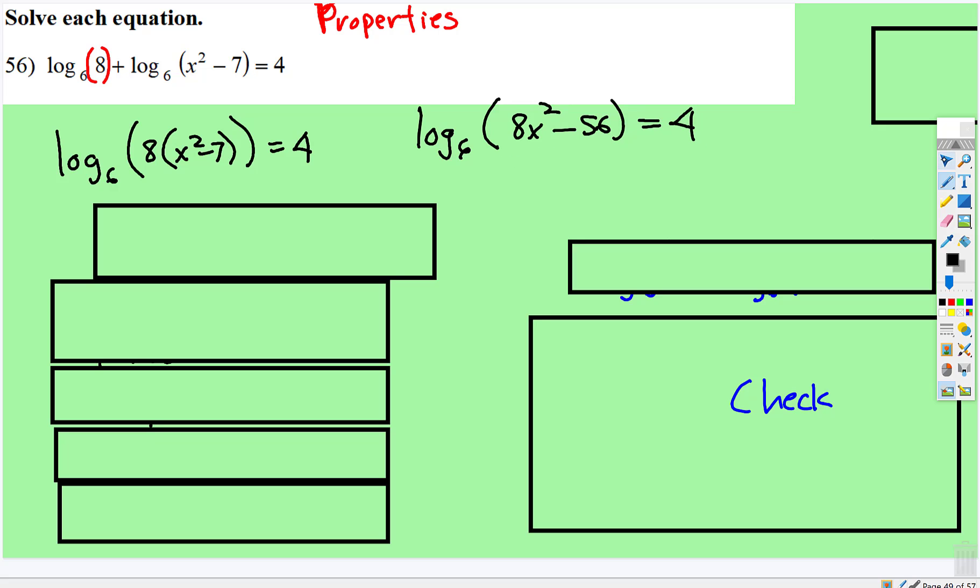Now there's nothing else you can do, so you can rewrite it. 6 to the 4th is equal to 8x squared minus 56. Let's see what 6 to the 4th is.